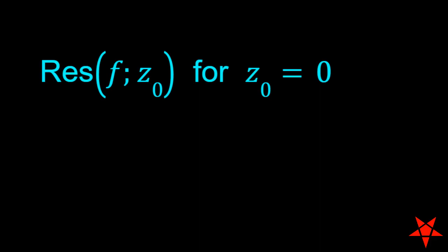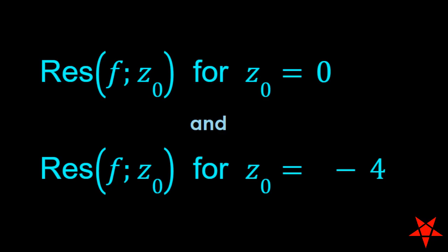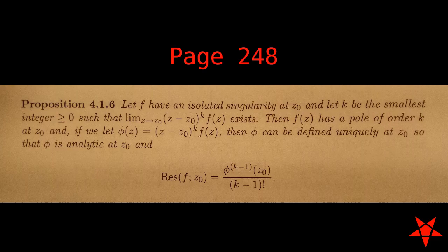So, we will be calculating two separate residues in this problem: f of z at z naught equals 0 and f of z at z naught equals negative 4, and we will begin with the former. We will be using Proposition 4.16 on page 248 for calculation of both of the residues in this video.